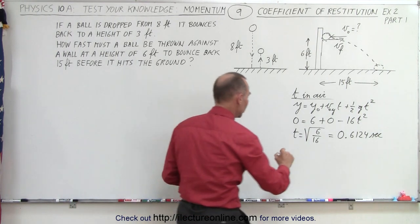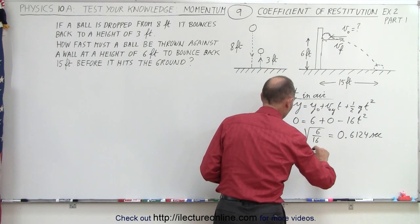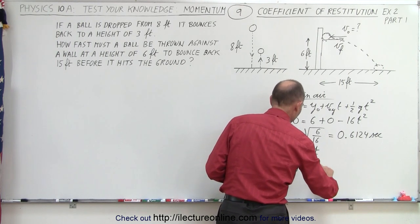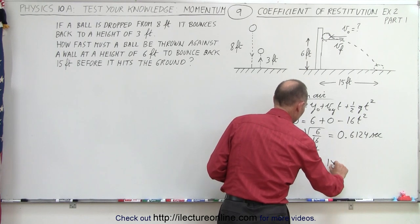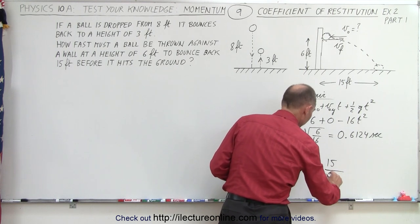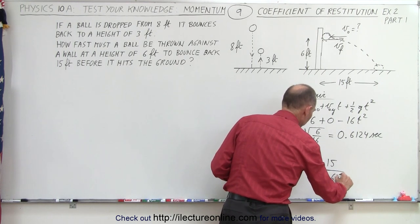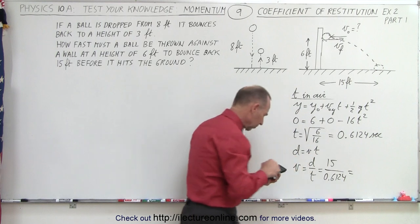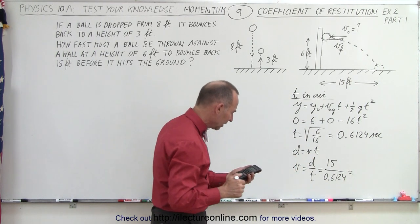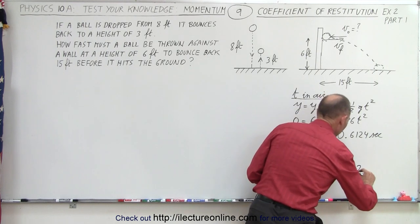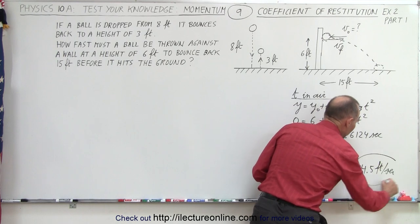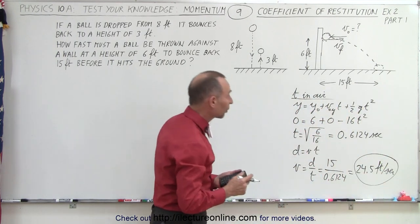Now we use the equation distance equals velocity times time, or velocity equals distance divided by time. We need to reach a distance of 15 feet in a time of 0.6124 seconds. Taking the inverse of the time and multiplying by 15, we get a required return speed of 24.5 feet per second. That's the return velocity we need.